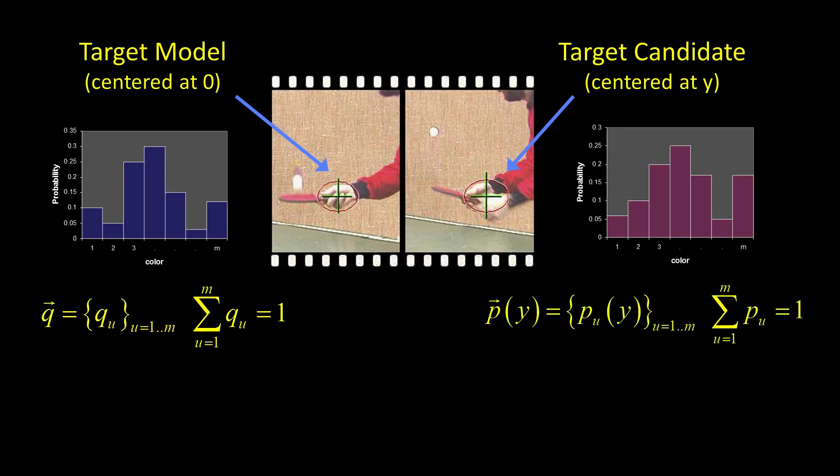At some new location we can compute the distribution again. So now p of u is a function of y, where y is the point that we're considering. Remember, you have to consider p of z given the state. So y is going to be that new point. It's called y instead of x - that's how it's done in the mean shift literature. And again, we're going to build a distribution by assuming that these things sum up to one.